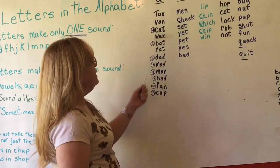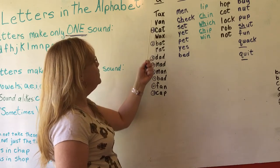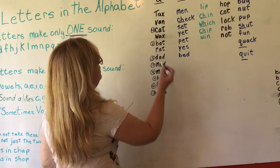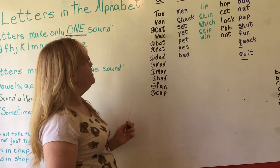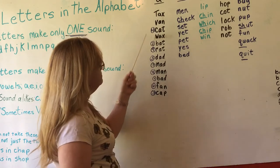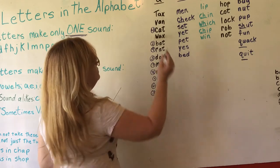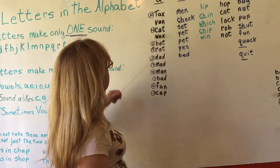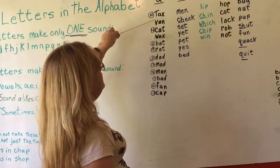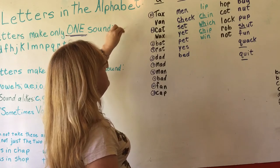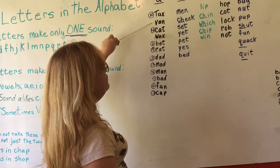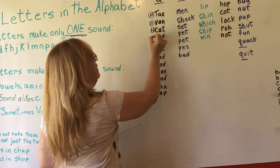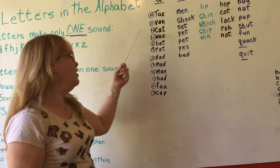N? No. O, P, Q, R — rat. There's only one R word, so that would be next. S? No. T — tax. Only one T word, so that's next. We have two words left: van and wax. Does V come before W or W before V? V before W. So van, then wax.